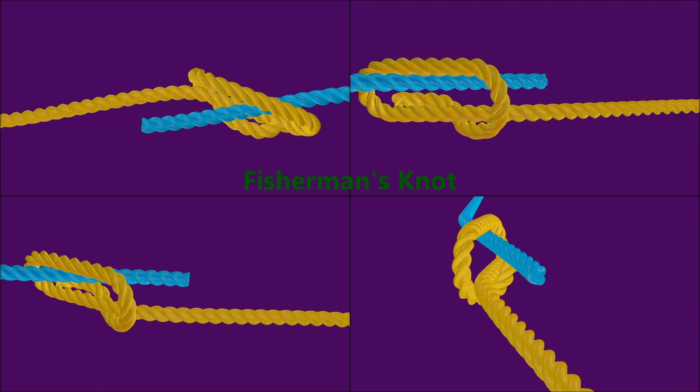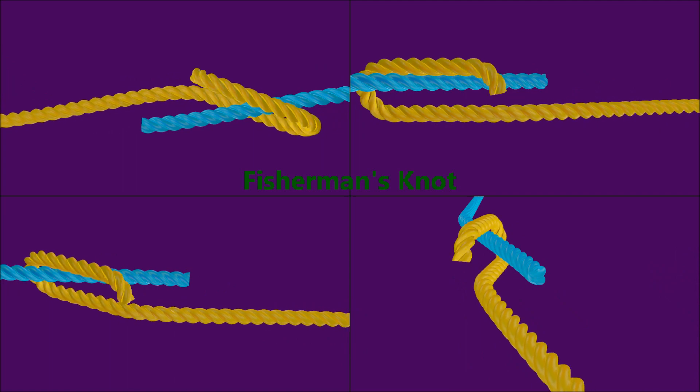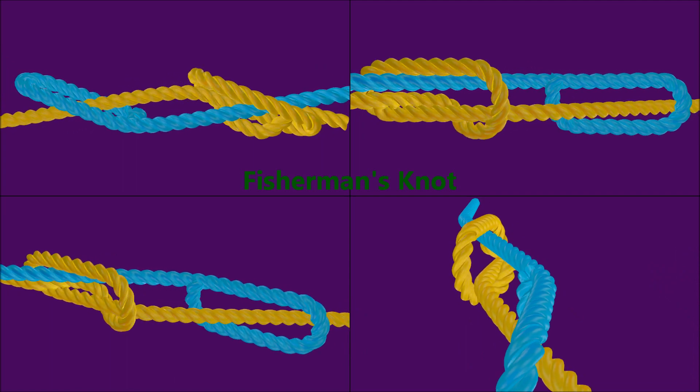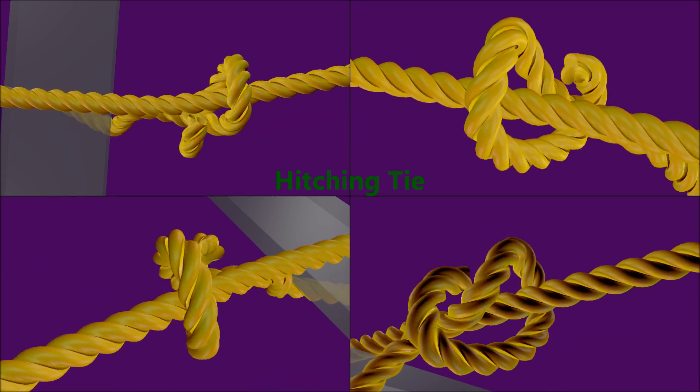This knot is used to tie two pieces of rope together and will almost never come undone. The hitching knot will come undone if you pull the other end of the rope.